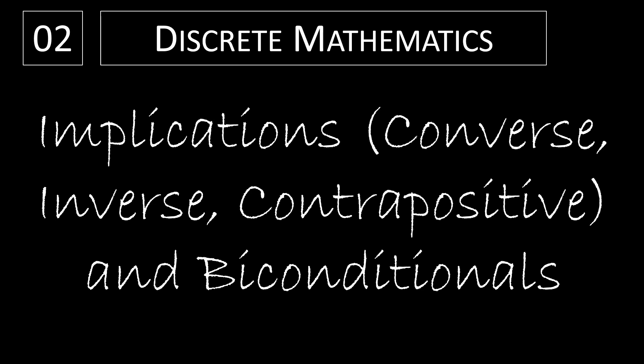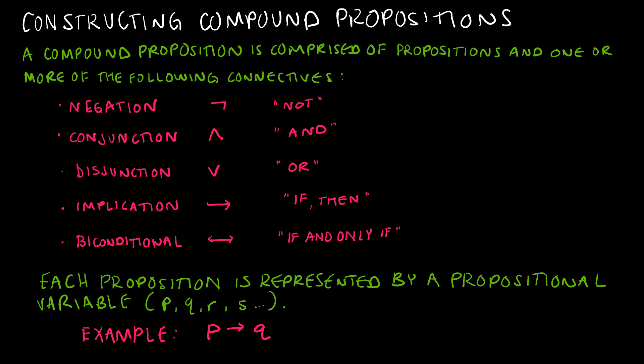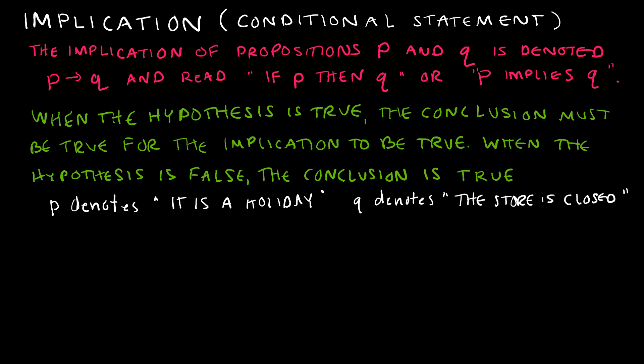In this video we are going to complete our study of the connectives by learning about implications, including the converse, inverse, and contrapositive of the implication. Implications are if-then statements, and biconditionals are if-and-only-if statements. In video 1 we covered negation, conjunction, and disjunction; here in video 2 we will talk about the implication and biconditional. If you are a math nerd, you will write if-and-only-if as IFF.